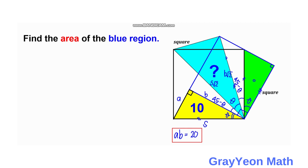As you can see, if you focus on this blue triangle, we have two known sides: s√2 and b√2, and the angle in between those two sides of the triangle is angle theta. We can use the cosine law to find the unknown side — let us call it x.